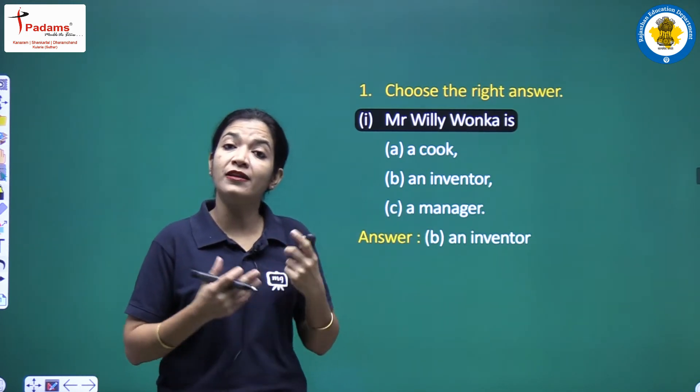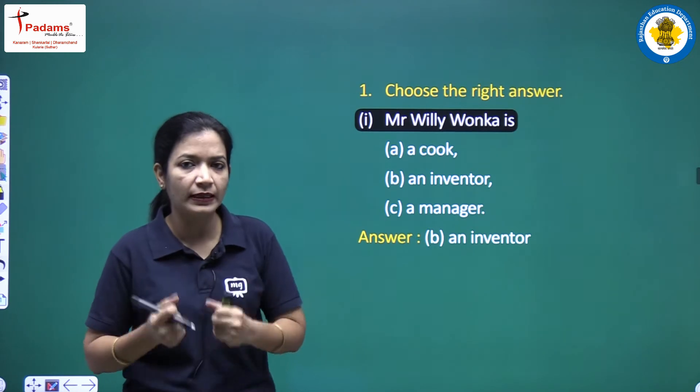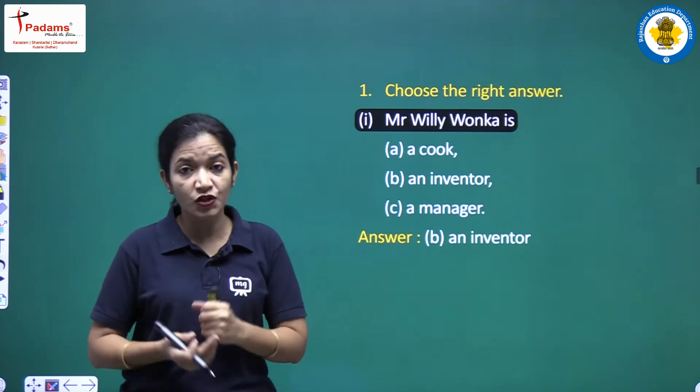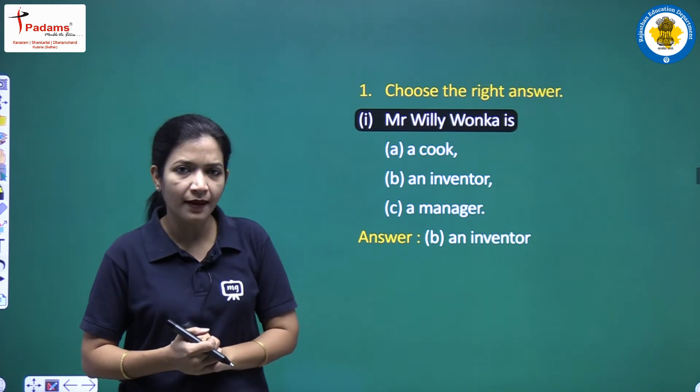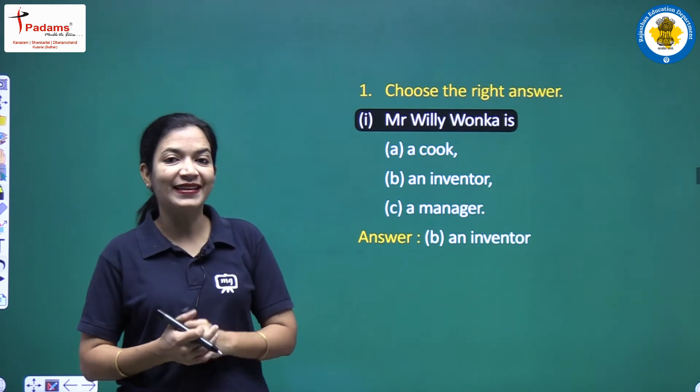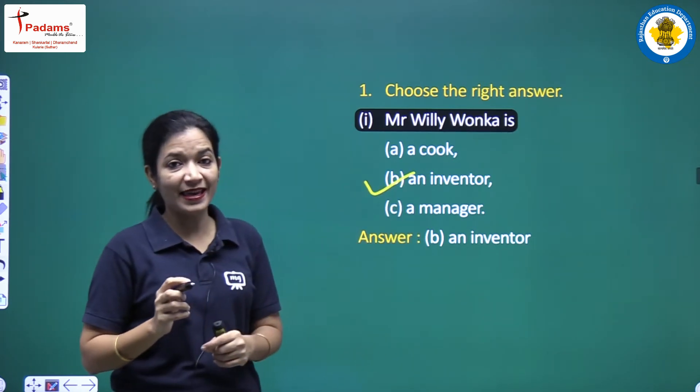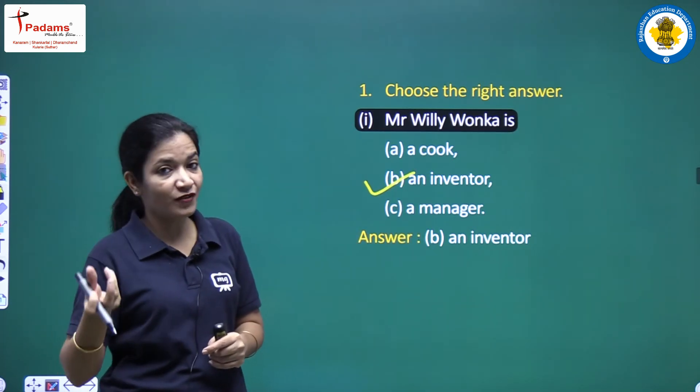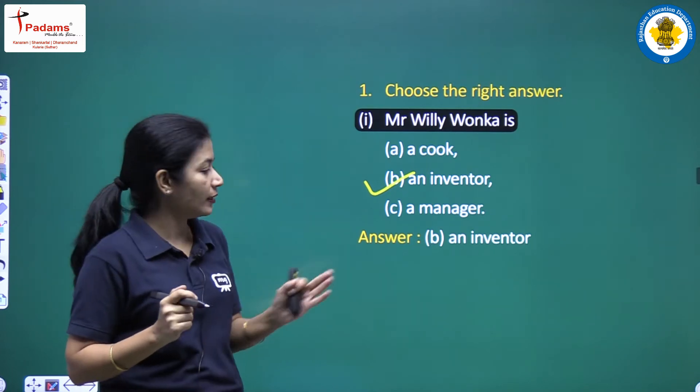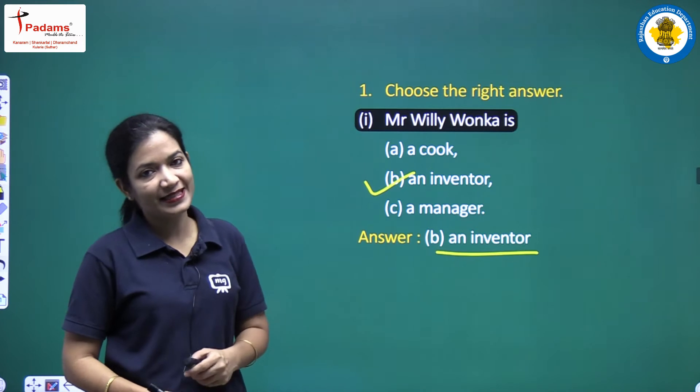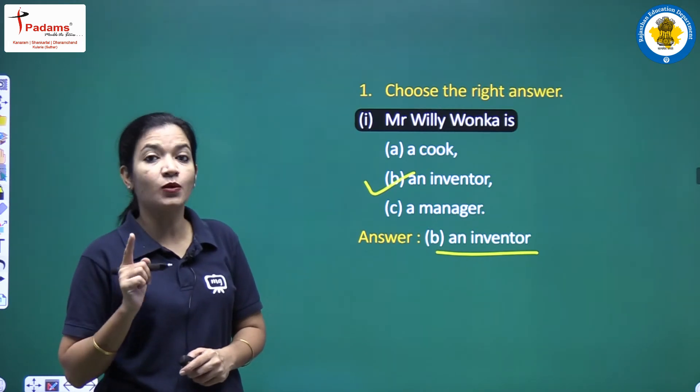Or was he an inventor, or was he a manager? What was he? Yes, he was an inventor. The answer is he was an inventor, Mr. Willie Wonka.